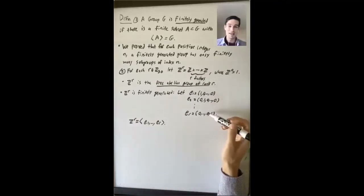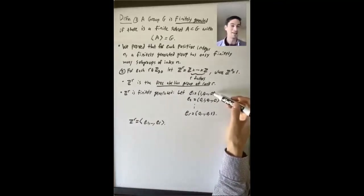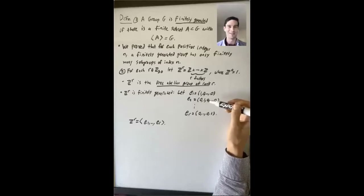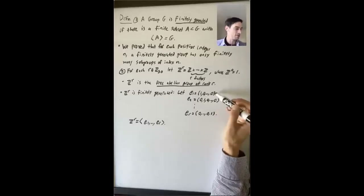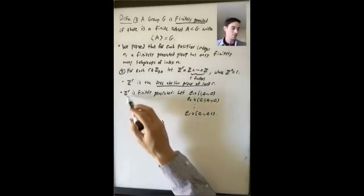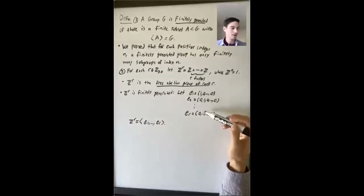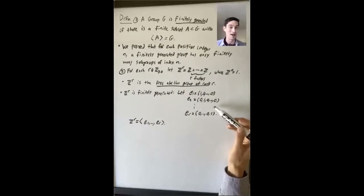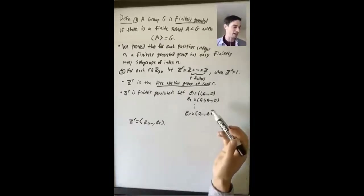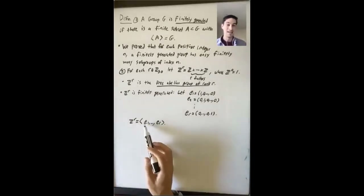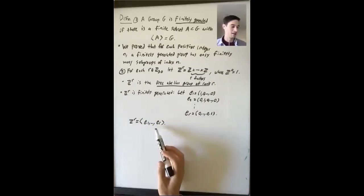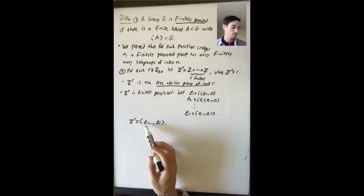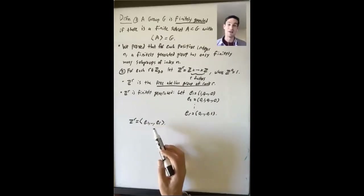Z^R is generated by R things that look exactly like the standard basis vectors in Z^R — (1,0,0,...), (0,1,0,...), and so on up to (0,0,...,1). You can show that any subgroup of Z^R containing all of these contains all their linear combinations as well, like their span as vectors. So Z^R is generated by this finite subset of size R. Even though when R is positive this group is infinite, here we see a generating set of size R.